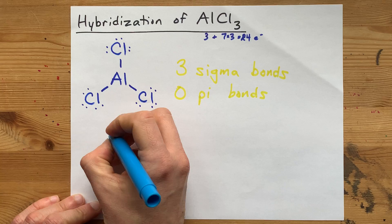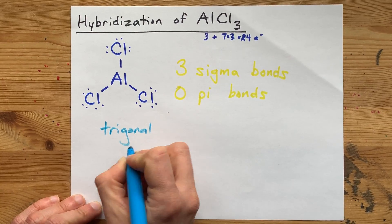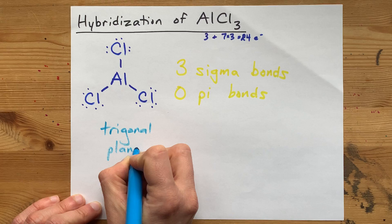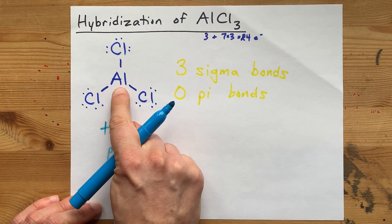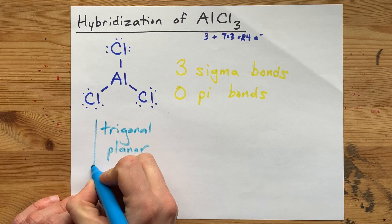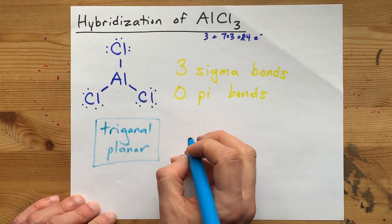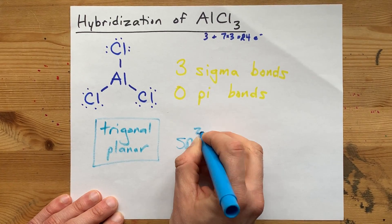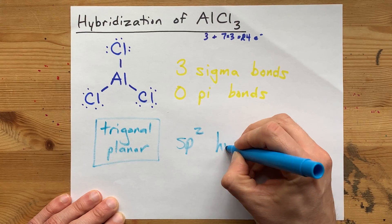But according to VSEPR, this molecule is trigonal planar. That's because there's no lone pair on the aluminum. After all, it's an exception to the octet rule. It's the shape here that forces you to choose sp2 hybridization.